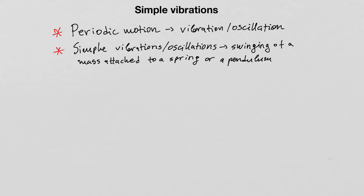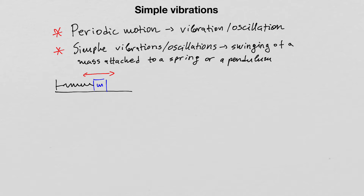When I say a mass attached to a spring, we can have two different configurations. We can have a horizontal configuration where a spring is fixed at one end, and on the other end a mass is attached. This system can be put in motion and the mass will be moving horizontally, left and right — that is the oscillation of the mass connected to the spring.